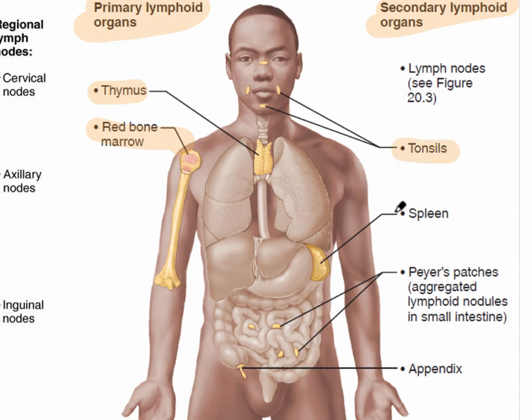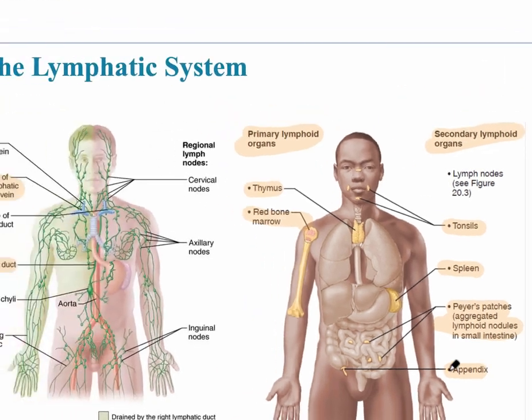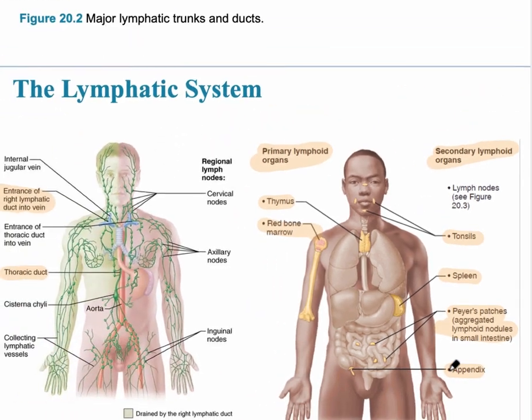Some examples of secondary lymphoid organs include the tonsils, spleen, Peyer's patches, and the appendix.